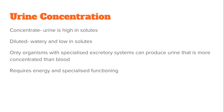When talking about urine concentration, urine can be concentrated — meaning it is high in solutes — or it can be diluted, meaning it's watery and low in solutes. The way organisms produce urine with these different concentrations is through highly specialized excretory systems. Producing urine requires energy and is a specialized function that organisms undertake.